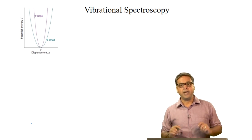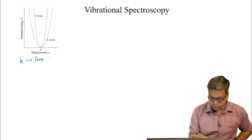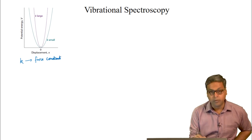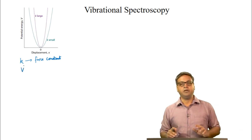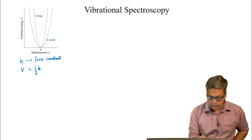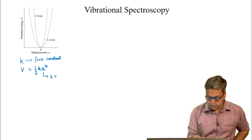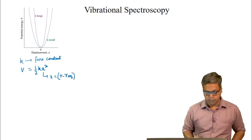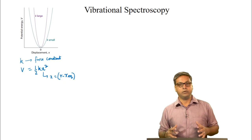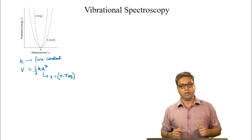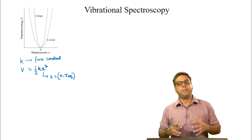We saw that if k is the force constant of the bond, the potential energy V can be written as half k x squared, where x equals r minus r-equilibrium. Here r is the bond length at any point during the vibration and r-equilibrium is the equilibrium bond length. The potential energy can be approximated by a parabola.